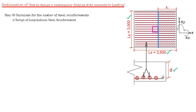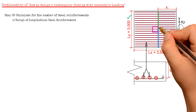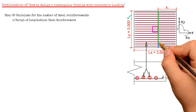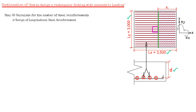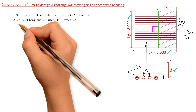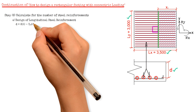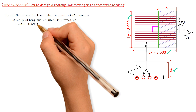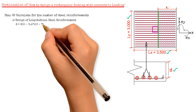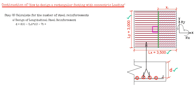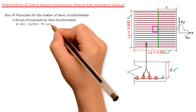To calculate for the effective depth D, cutting through this section, the effective depth D would be equal to the thickness 600 mm, minus 1.5 times the diameter 20 mm, minus concrete cover 75 mm. That gives us a value of 495 mm.